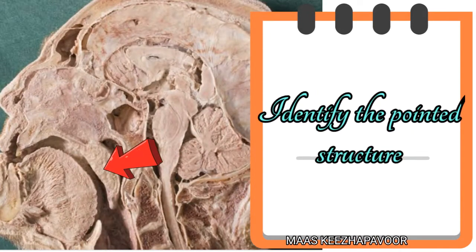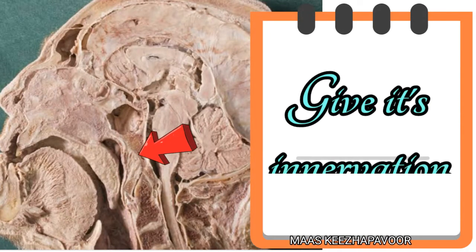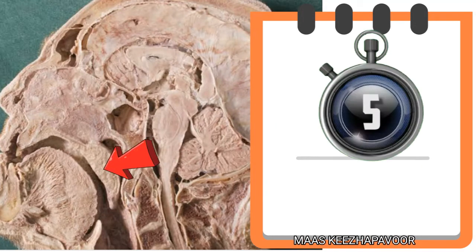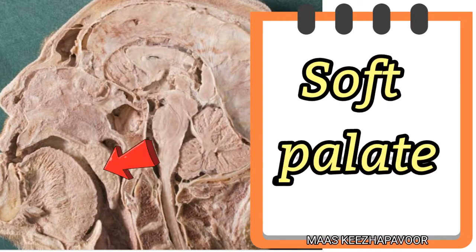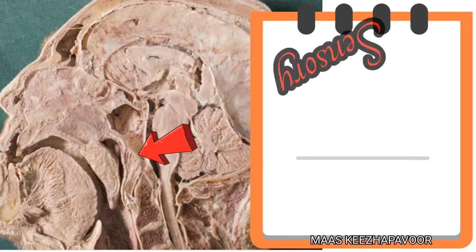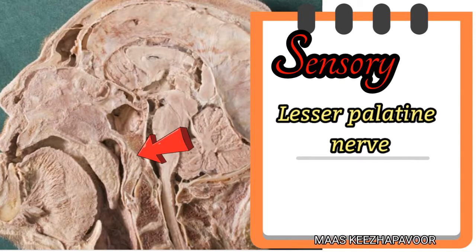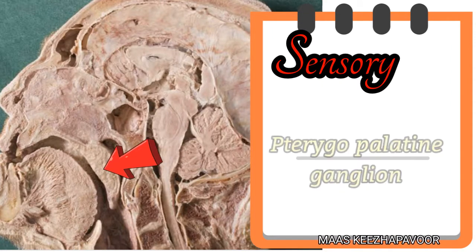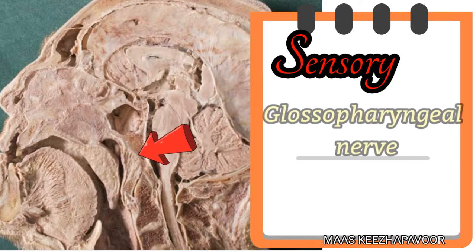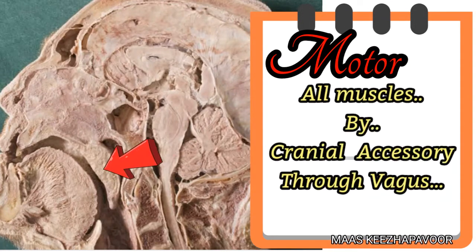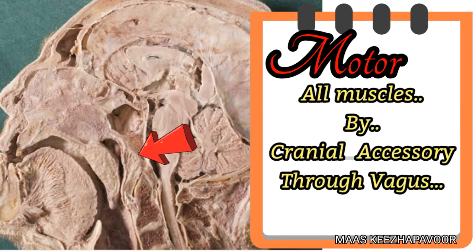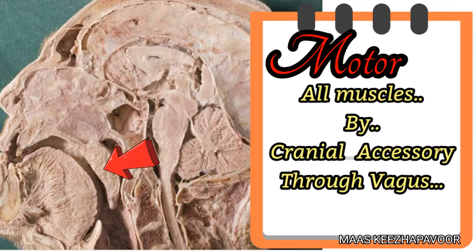Identify the pointed structure. Give its innervation. The pointed structure is soft palate. The sensory innervation is by lesser palatine nerve from maxillary nerve through pterygopalatine ganglia and glossopharyngeal nerve. The motor fibers for all the muscles of soft palate except tensor veli palatini are supplied by cranial accessory nerve through vagus.